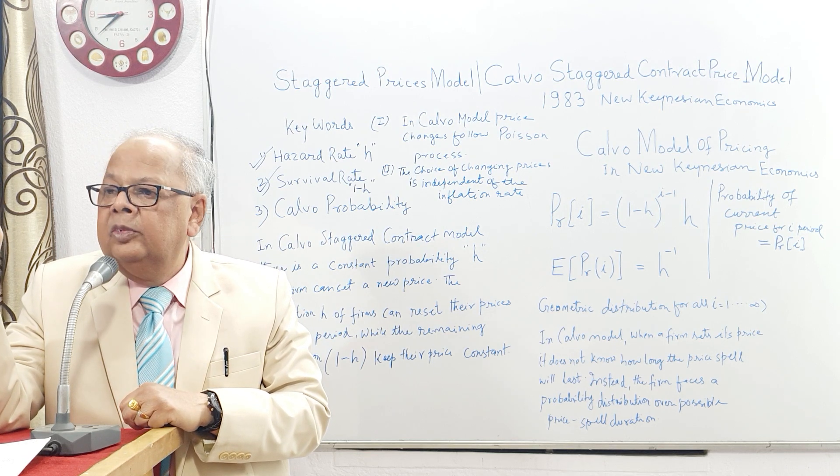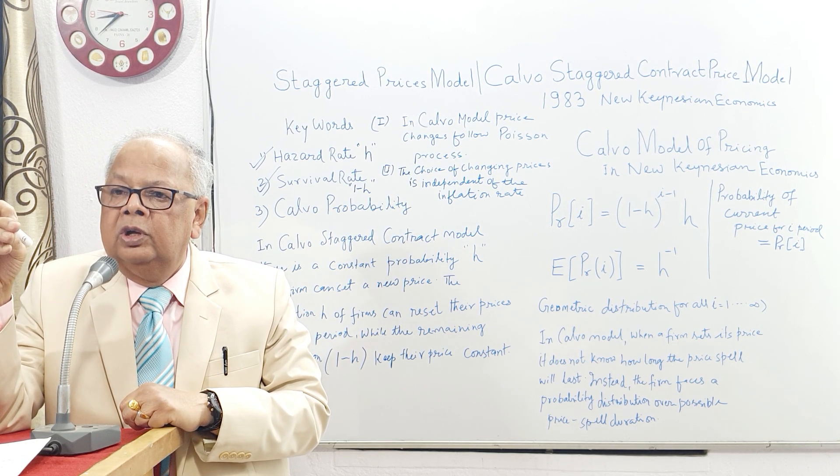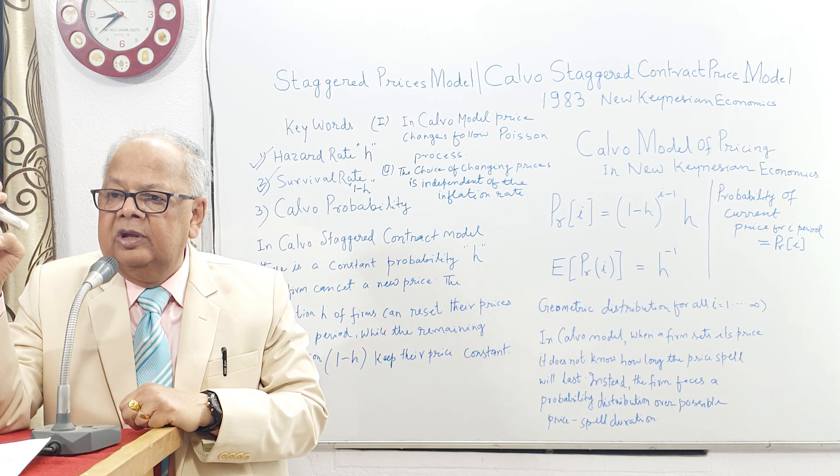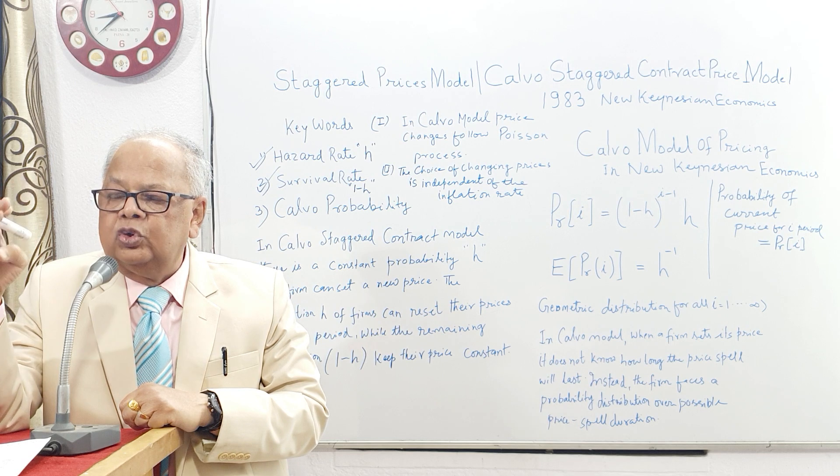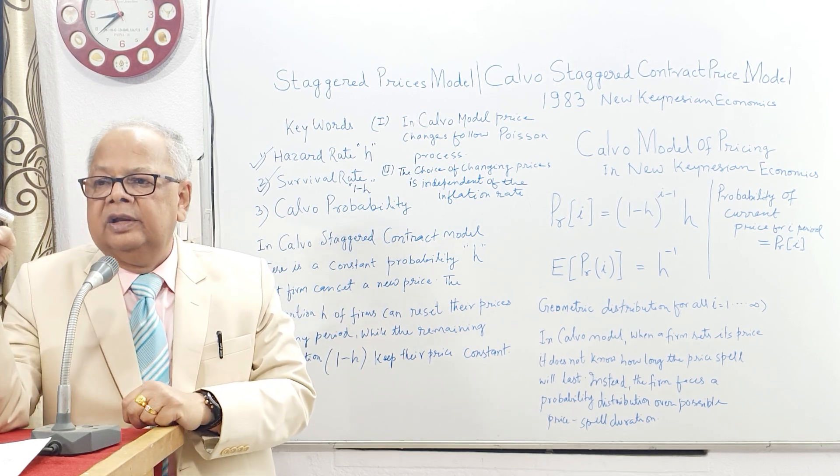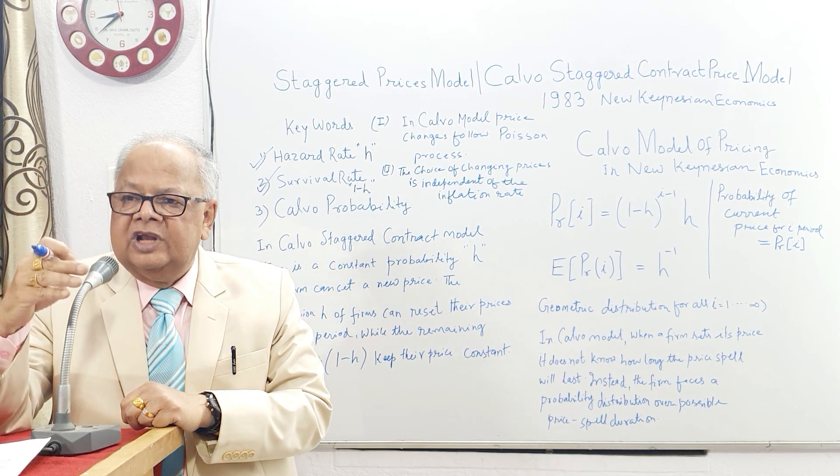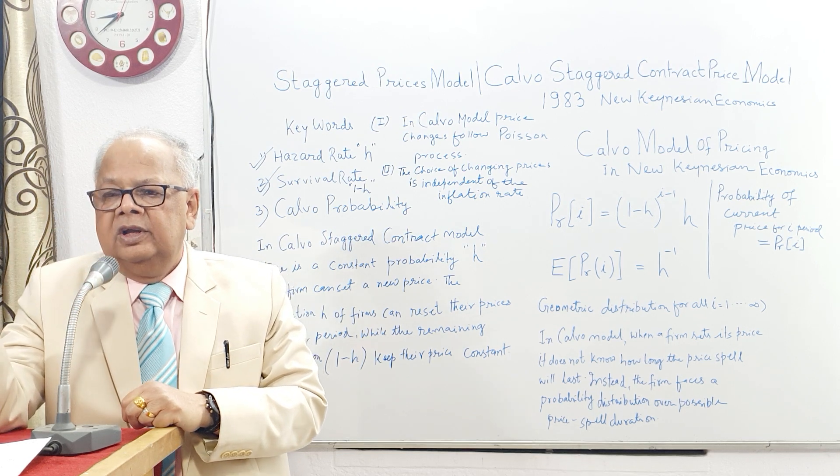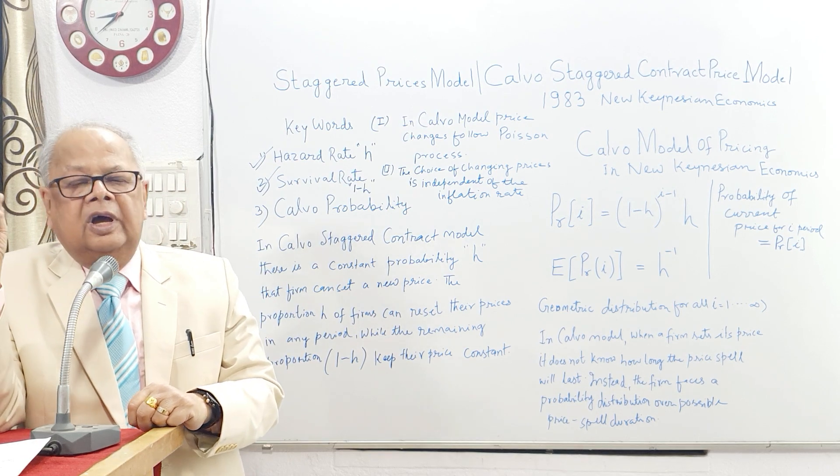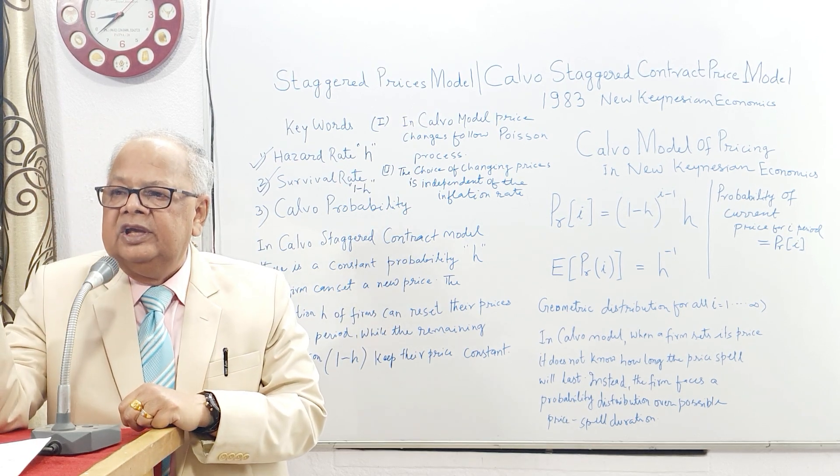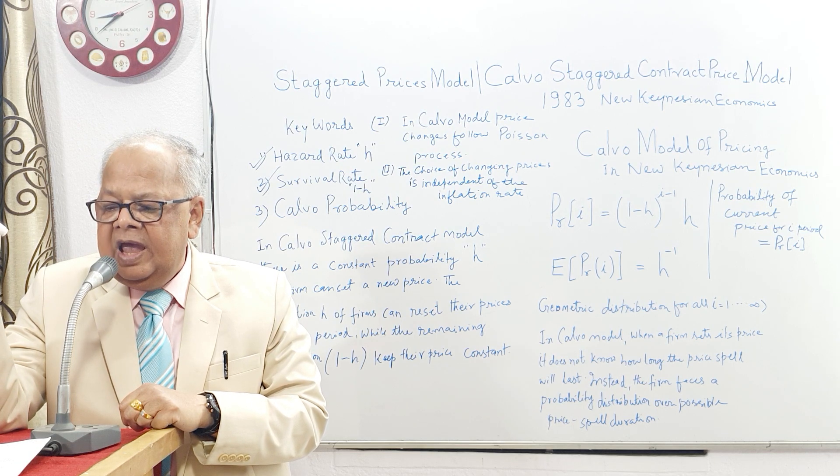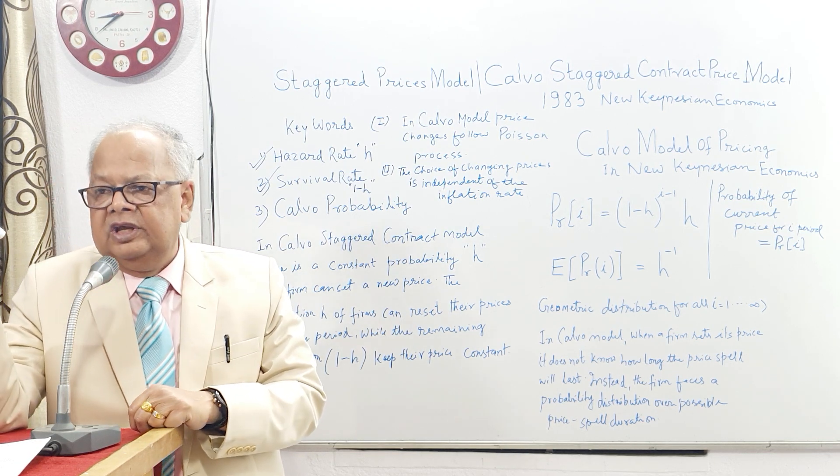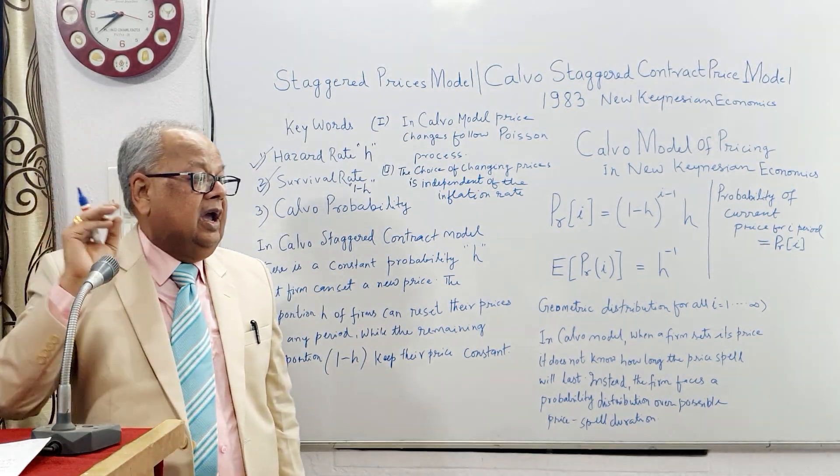If there is change in the dynamic stochastic general equilibrium and economy falls down due to demand shock, then how can we recover? That depends upon the percentage of staggered prices and the percentage of not following the change in price—that is survival rate.